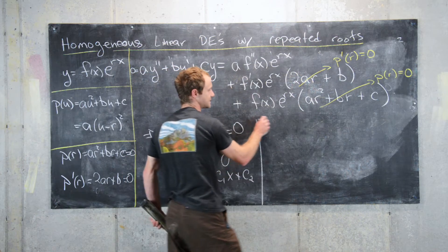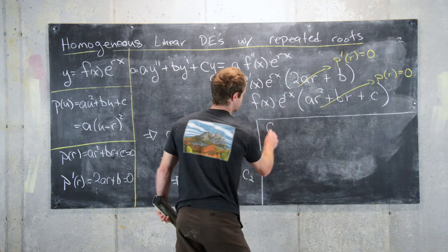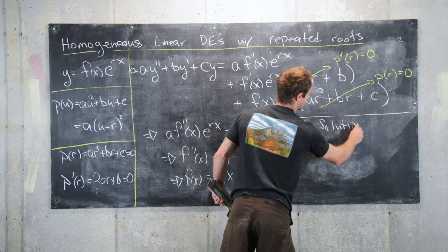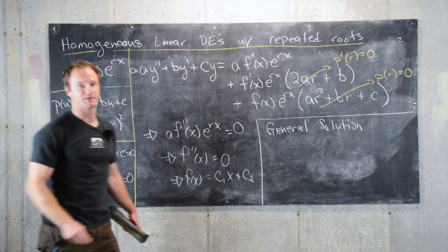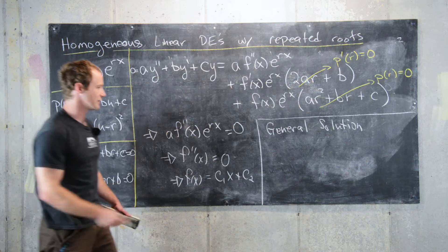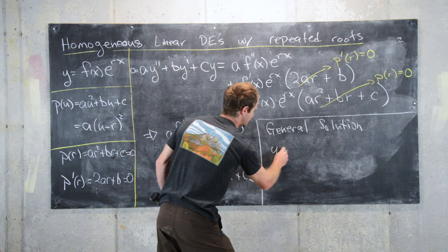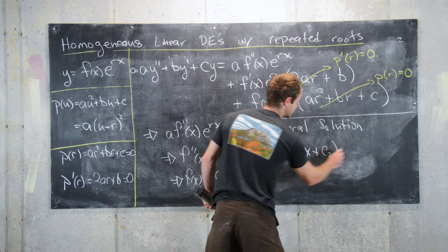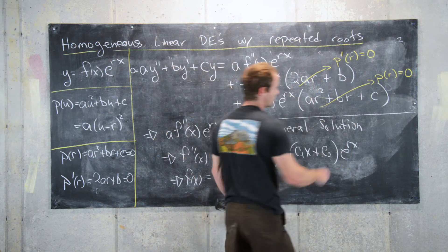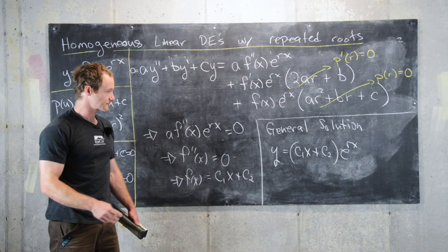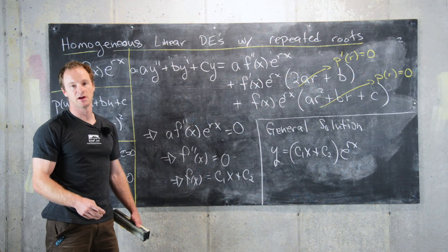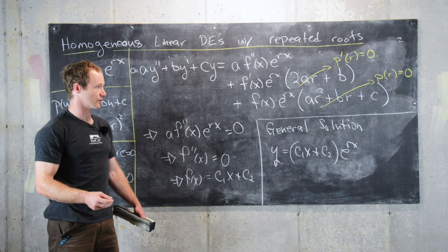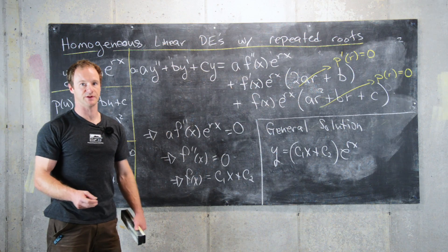So, that gives us a general solution for this type of second order differential equation when you have a repeated root. Your general solution is of the form (c₁x plus c₂) times e to the rx, where r is the root. Now, it's not super hard to generalize this to higher order differential equations or higher order roots of the companion polynomial, but we won't do that here.